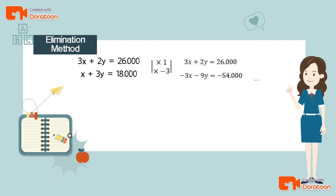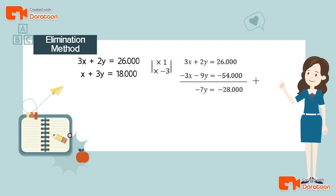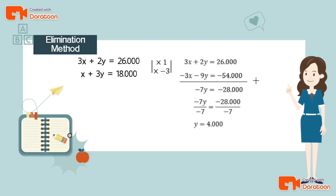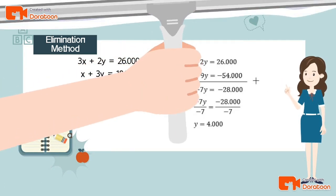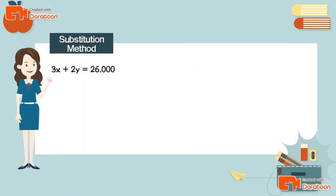Adding the two equations: 3x + (−3x) cancels to 0. Then 2y + (−9y) = −7y, and 26,000 + (−54,000) = −28,000. Dividing both sides by −7: y = −28,000 ÷ −7 = 4,000. So the value of y is 4,000.